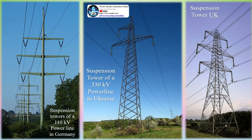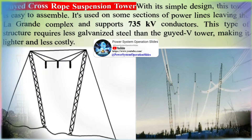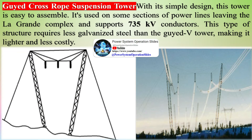Angle towers, sometimes called semi-anchor towers, must resist transverse loads induced at an angle in addition to the usual wind, ice, and broken conductor loads. Angle towers are heavier than suspension towers by necessity. The guide cross-rope suspension tower, with its simple design, is easy to assemble. It is used on some sections of power lines leaving the La Grande complex and supports 735 kV conductors. This type requires less galvanized steel than the guide V tower, making it lighter and less costly.